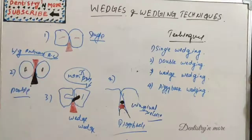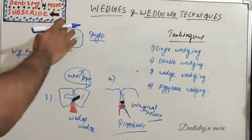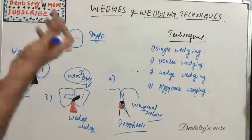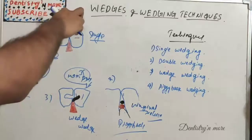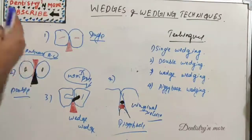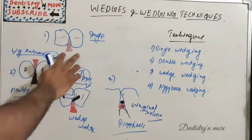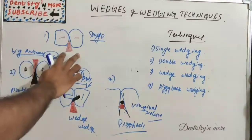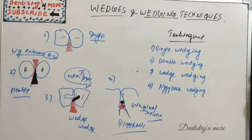If the buccal embrasure is bigger, we can point the wedge from buccal to lingual. We wedge the band tightly against the tooth. That is the single wedging technique.